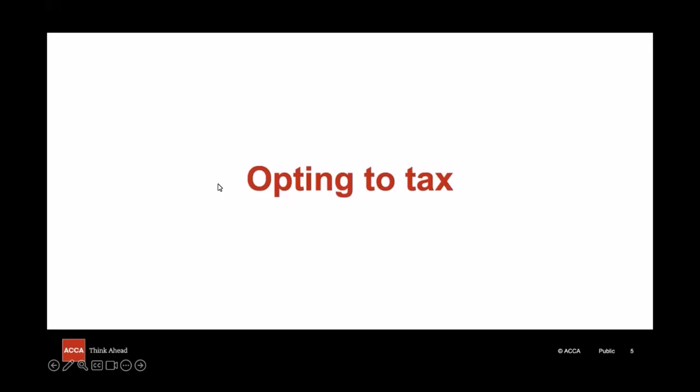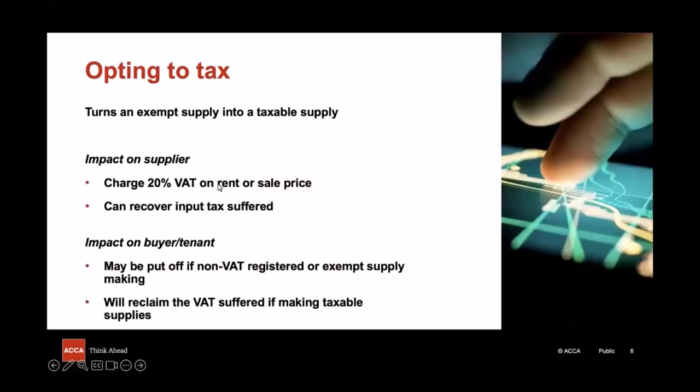But there is another possible outcome where the supply of a building or piece of land is exempt under those first principles. We can actually choose to turn an exempt supply into a taxable one, which is known as opting to tax and requires an election to be made. The impact on the supplier — the business that has made the election — is that they will now charge standard rate VAT on the rent or sale price, but by making a taxable supply they can recover input tax suffered which they may not have been able to do before.